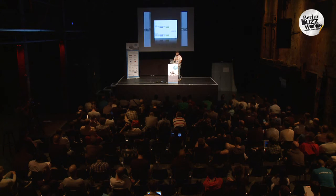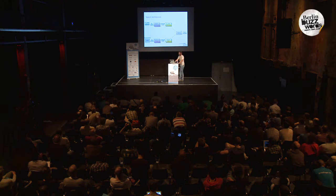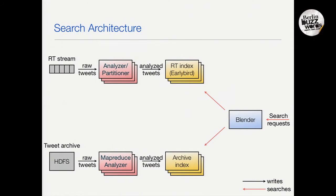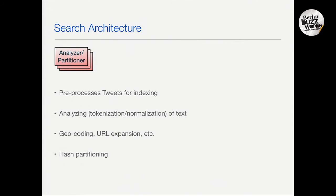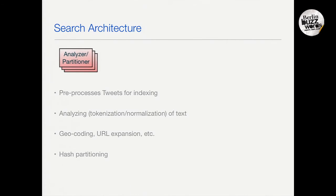Let's talk about our search architecture. We have a real-time stream of raw tweets in JSON coming in. We have a component called the analyzer — named the same thing in Lucene — and the partitioner. It analyzes and tokenizes tweets and prepares them for indexing, creating token streams in Lucene. It does term normalization, lower-casing, geocoding, expands shortened URLs, and also does hash partitioning. I'll show later how the index is partitioned.